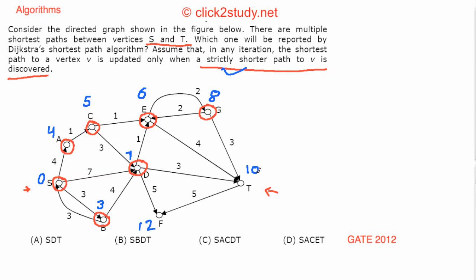Finally we finalize T at distance 10. The path used was discovered via E to T. We never updated the T distance after that because D to T also gave 10, which is not strictly shorter. Tracing back the path: S → A → C → E → T. This corresponds to option D. The strictly shorter condition is the key: from D we don't get a strictly shorter path to T than the one already found via A.